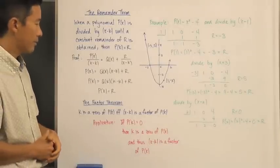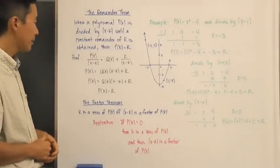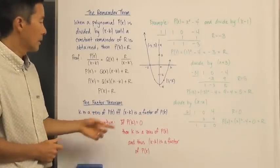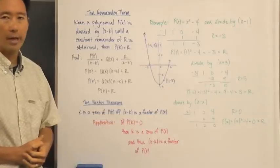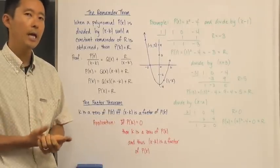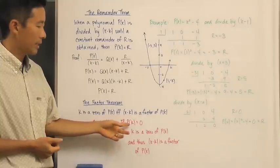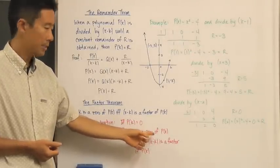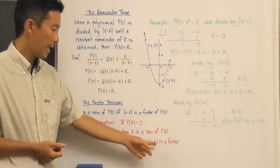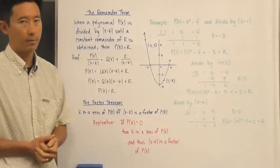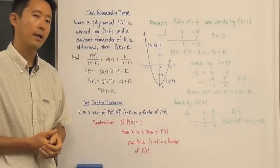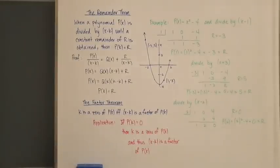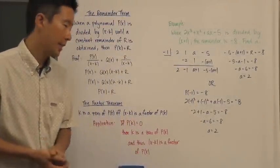Now we come to the Factor Theorem. It says k is a zero of p(x) if and only if x minus k is a factor of p(x). A key application: if we find that p(k) = 0, then k is a root of p(x), and therefore x minus k must be a factor of p(x). Let's look at a particular application of that.